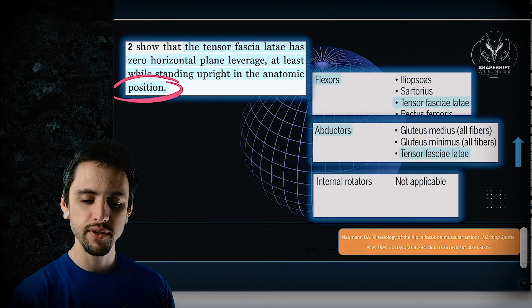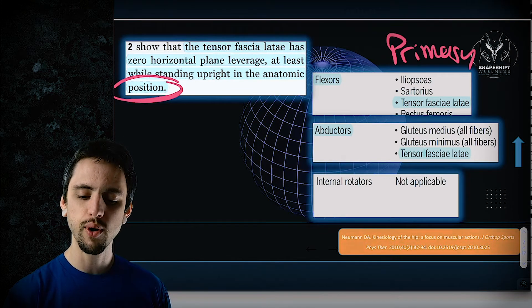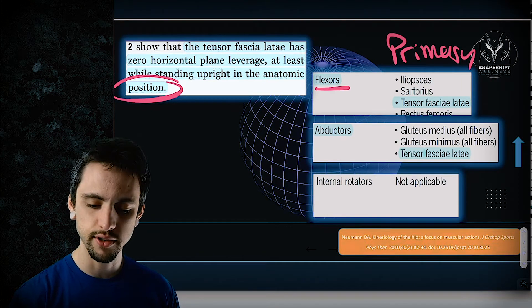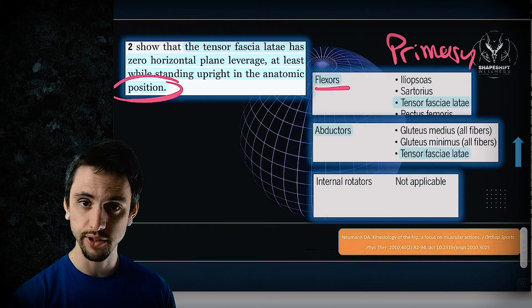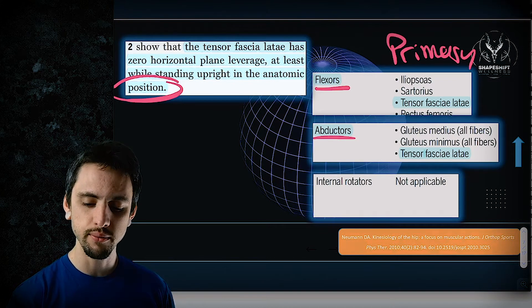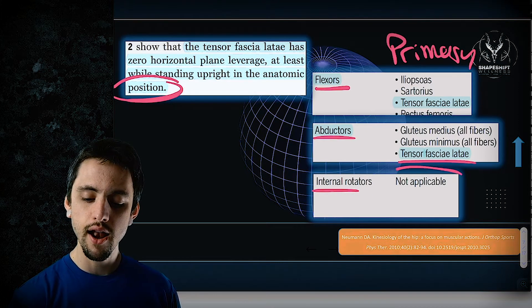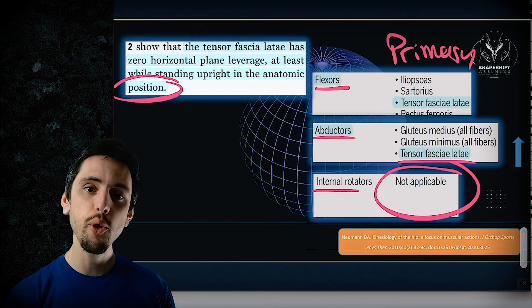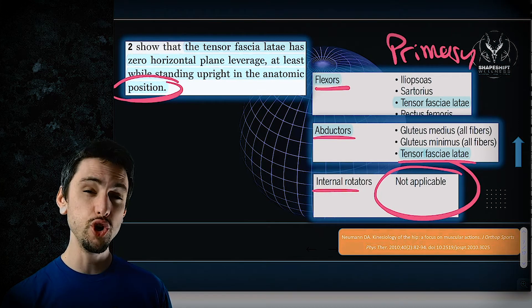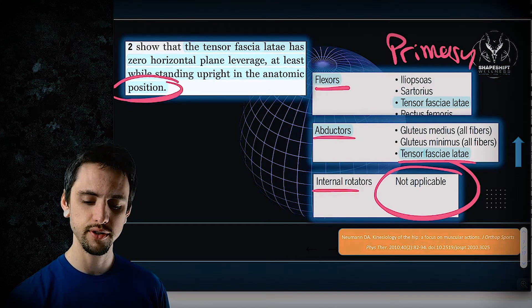The table also classifies primary muscles by action. Primary hip flexors include the iliopsoas, sartorius, and TFL — so the TFL is a primary flexor. For abductors: glute med, glute min, and TFL are primary abductors. For internal rotators from a neutral position, there are none listed as primary — there are some that help, but from neutral there are no primary internal rotators. Once we flex the hip, the story changes.